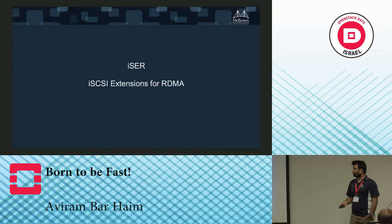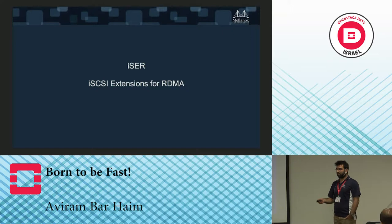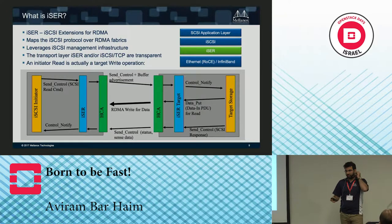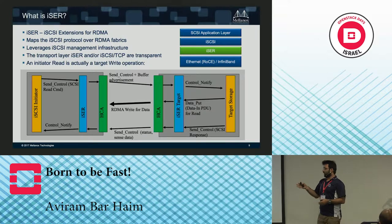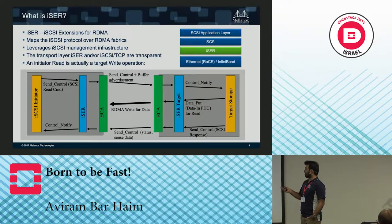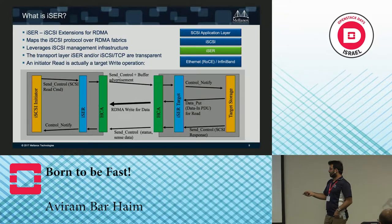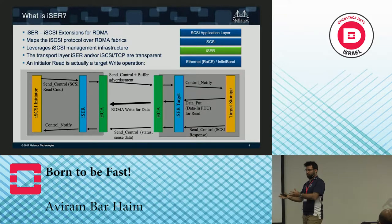We will start with iSER — the iSCSI Extension for RDMA. As you know, in the LVM default driver, iSCSI targets like TGT and LIO are the defaults. We added iSER support in the Kilo release with just one parameter change. iSER is an iSCSI extension for RDMA that leverages the management infrastructure with all transport changes done transparently to the user. In iSER, an initiator read sends a request to the target, and then the target directly writes the data back, saving a lot of time and effort.